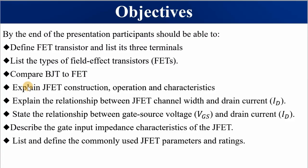Number four, you must be able to explain how the junction field effect transistor is constructed, its operation, and its characteristics. Number five, you must be able to explain the relationship between junction field effect transistor channel width and its drain current, and also the relationship between gate-to-source voltage VGS and the drain current. You must be able to describe the gate input impedance characteristics of the JFET, and lastly, list and define commonly used JFET parameters and their ratings.